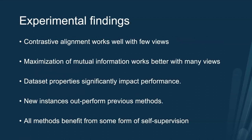In our experiments, we first find that contrastive alignment works well with few views but not as well with many views, consistent with our theoretical findings. We find that maximization of mutual information actually works better when you have many views. Dataset properties — such as the number of views and class imbalance — significantly impact the performance of methods. Our new instances outperform previous methods in the literature, and all methods benefit from some form of self-supervision.